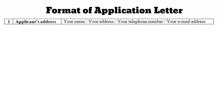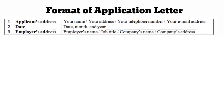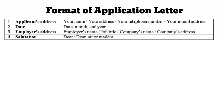First, Applicant's Address — consists of your name, your address, your telephone number, and your email address. Second, Date — consists of date, month, and year. Third, Employer's Address — consists of employer's name, job title, company's name, and company's address. Fourth, Salutation — for example, Dear Sir or Madam.